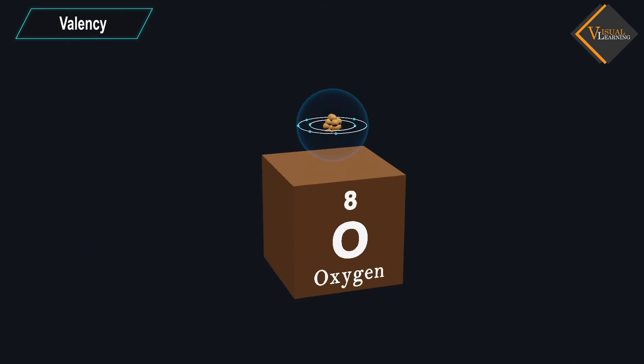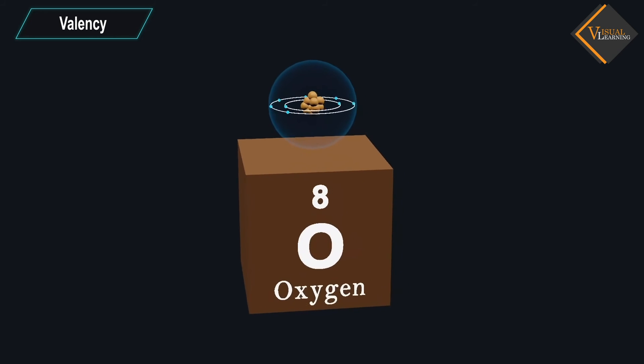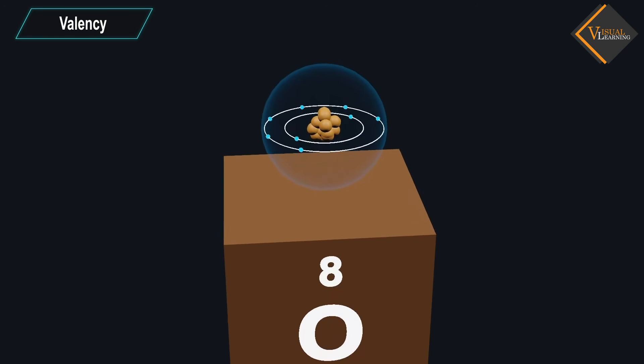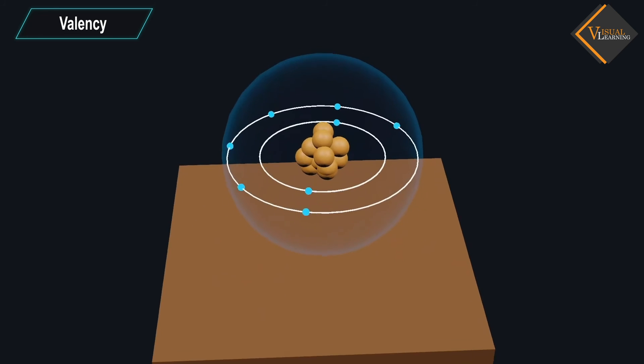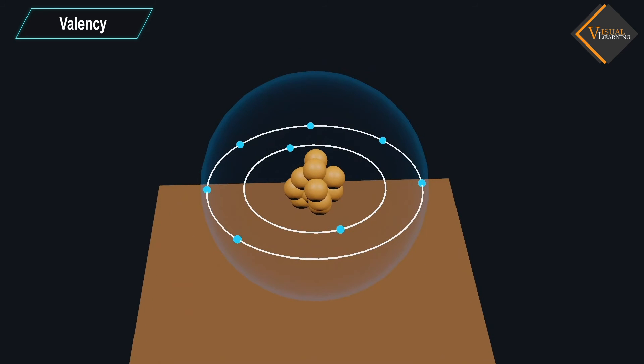Now, take the example of oxygen. In the outermost shell of oxygen, there are 6 electrons. So it can gain 2 more electrons to complete its octet, and hence the valency of oxygen is 2.